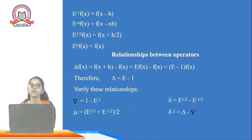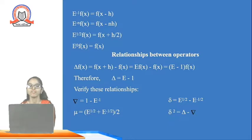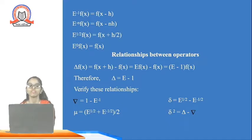Now, what is the inverse of the shift operator? E⁻¹ f(x) means f(x − h). Similarly, E^(−n) f(x) = f(x − nh). And E⁰ f(x) = f(x).